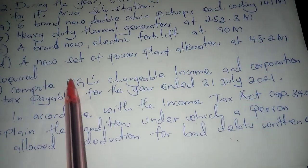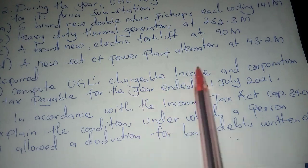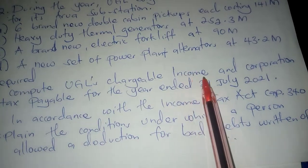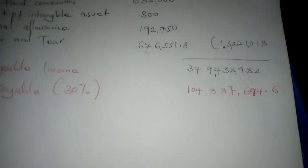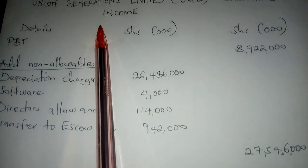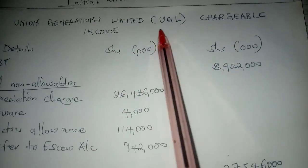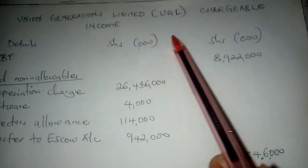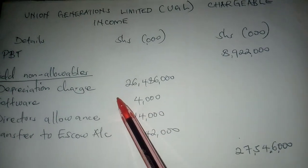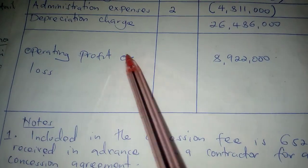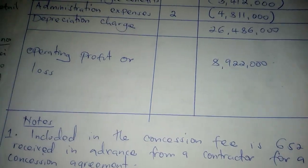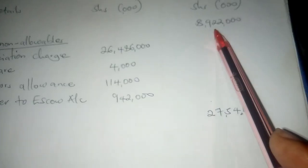We are going to handle Part A: compute UGL's chargeable income and corporation tax payable for the year ended 31st July 2021. For Unicorn Generation Limited (UGL) chargeable income, the first thing we start with is the profit before tax, which was given in the question as the operating profit or loss — 8,922,000.